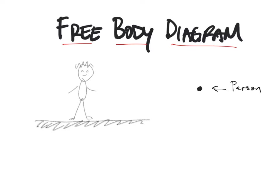Now what we're going to do is draw the forces that are acting on the person. The first thing we might recognize is that there's a force of gravity. Gravity is pulling the person downward, so to represent that I'm going to draw an arrow downward. I always draw the arrow starting on the dot and going in the direction of the force. I'm going to label that arrow mg, since it's gravity.